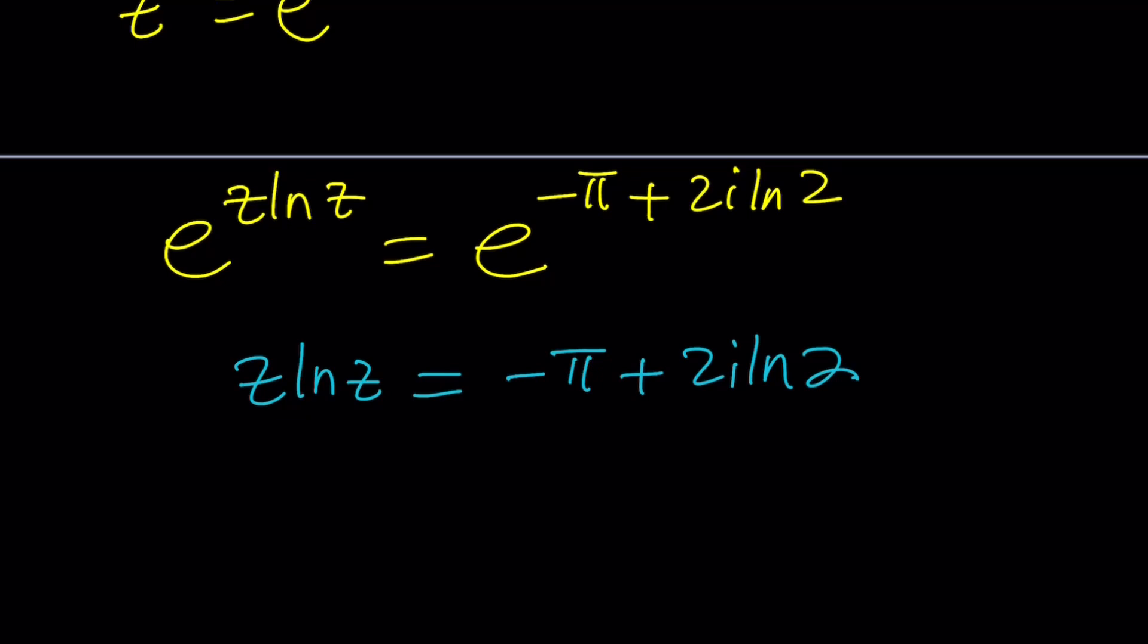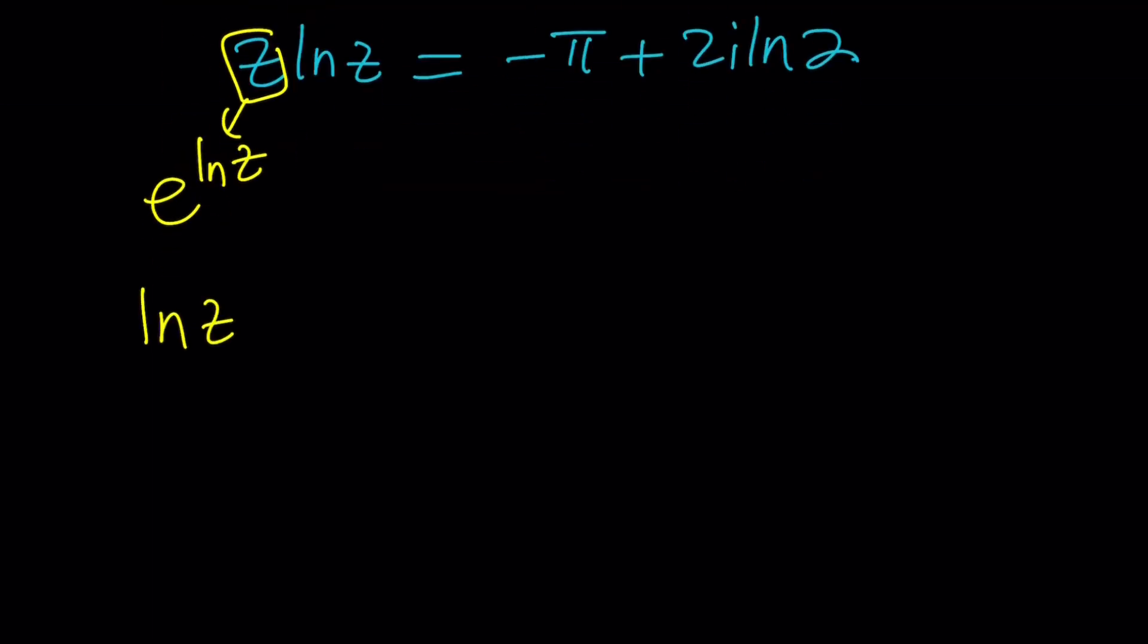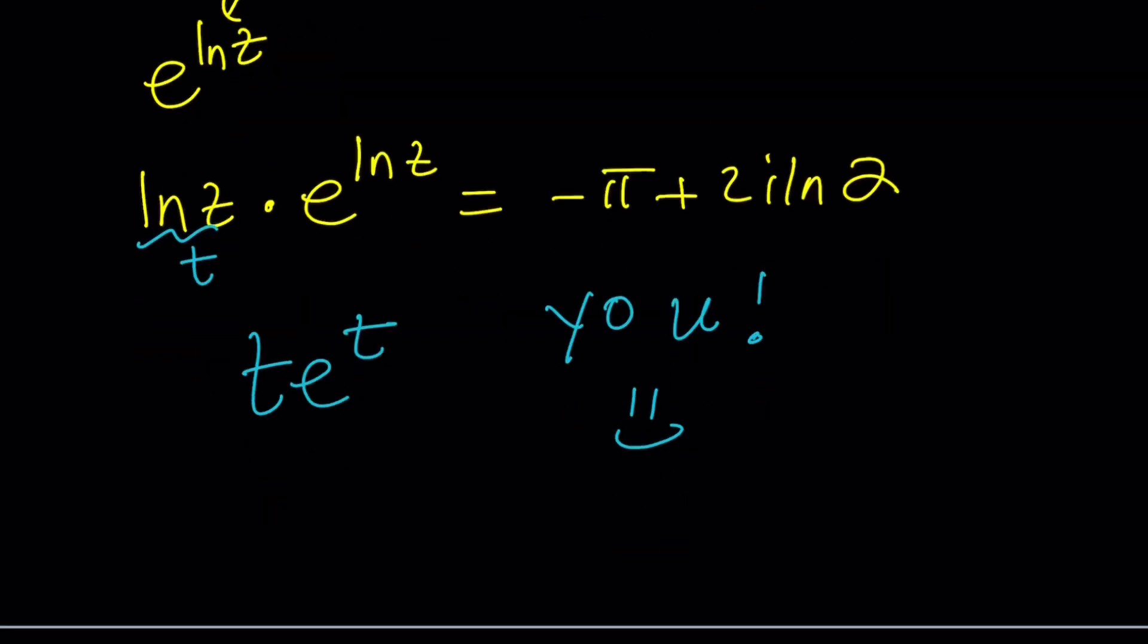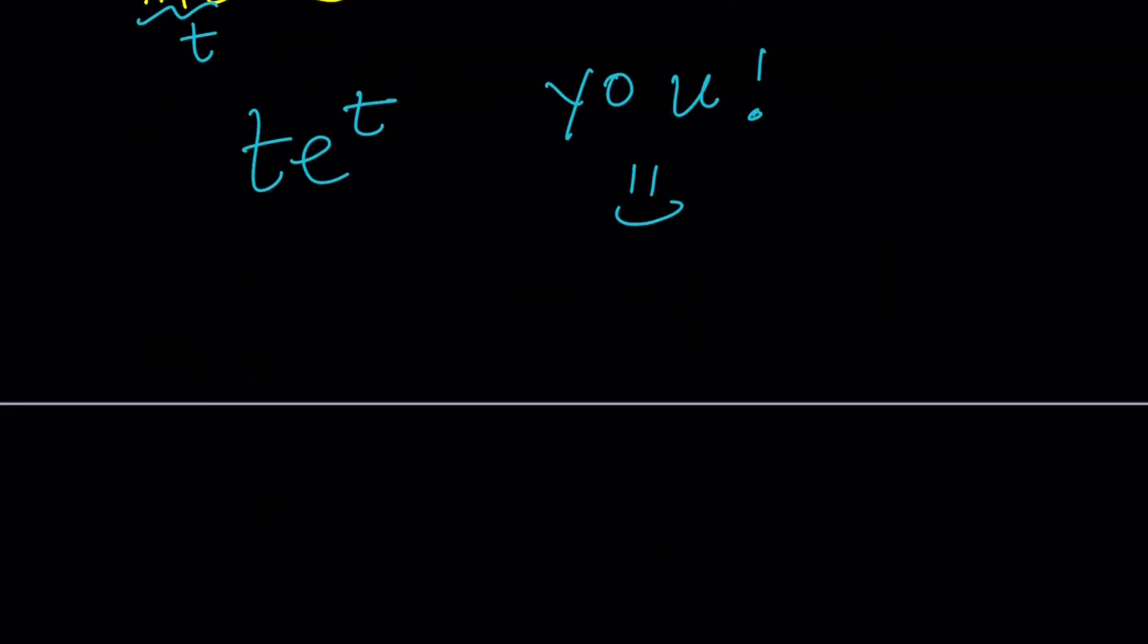What can I do with this? Can we use Lambert's W function? Let's take a look. We can replace Z with e to the power ln Z and we get ln Z times e to the power ln Z equals negative pi plus 2i ln 2. By replacing ln Z with T, we get T e to the T, which should remind you Lambert's W function. Can we use it? Maybe, probably. But we'll look at this later.